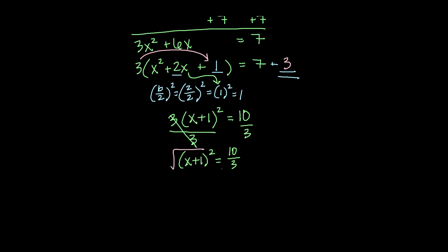Now we're going to take the square root of both sides to clear out that squared. So we get x plus 1 is equal to plus or minus the square root of 10 divided by the square root of 3.